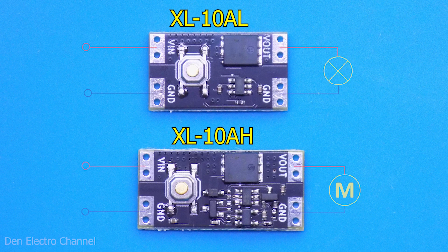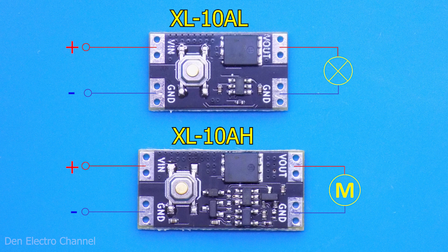Both modules are almost the same. Power is supplied on the left, and load is connected on the right. Here I depicted a light bulb and a motor. But in fact, you can connect absolutely any load. Whatever comes to your mind.